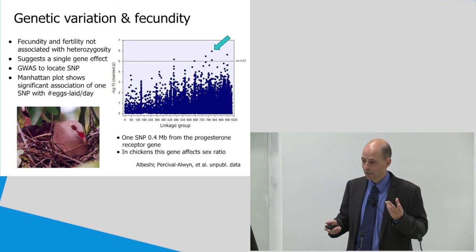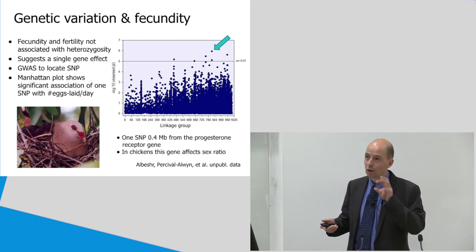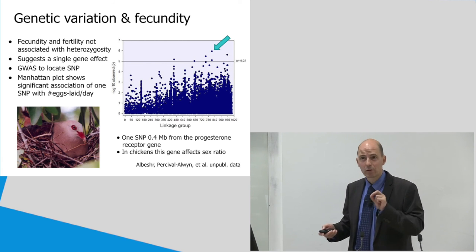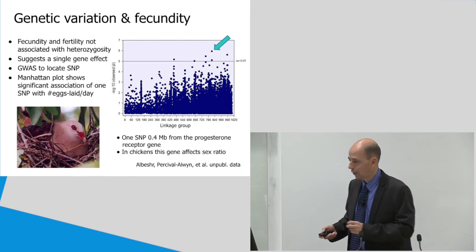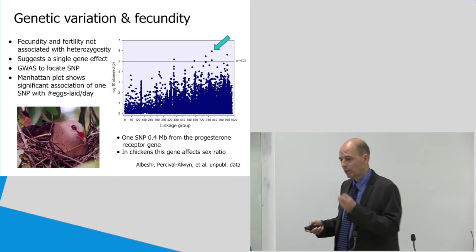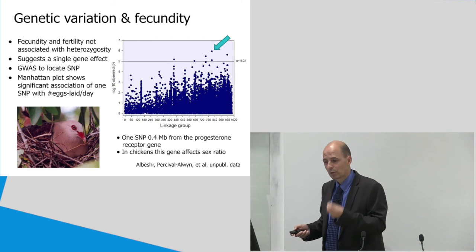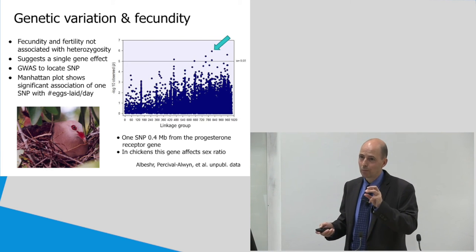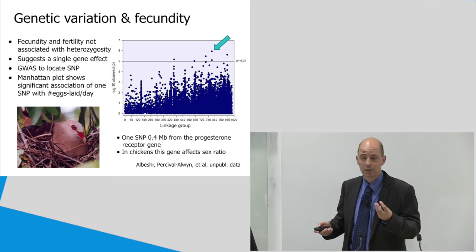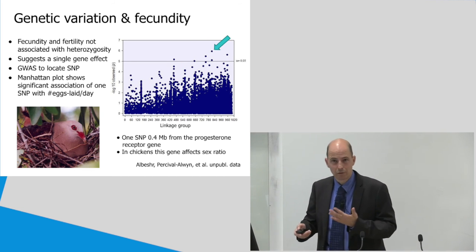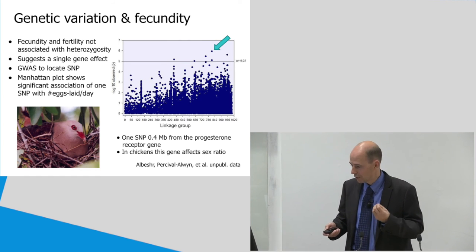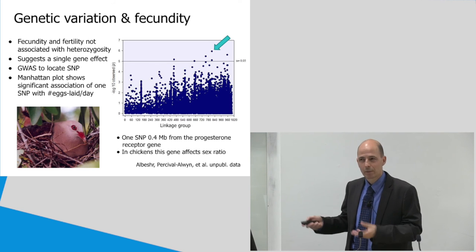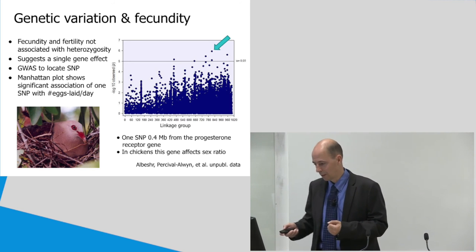So, what we then did, we conducted a GWAS analysis to locate the SNP or SNPs associated to fitness. So, we looked for the variants in the genome which are associated to fitness. Now, this over here, what I show you is a Manhattan plot, and this shows that there is at least one SNP that is strongly associated to the number of eggs being laid per day per female. So, there is a particular genetic variant in the genome that we know affects the fitness or the egg-laying capacity of female birds. And when we did a further study into this, it was quite close to the progesterone receptor gene, which is also known in chickens to affect sex ratio. So, we need to analyze this further to see what the exact effects are of this gene in the pink pigeon.